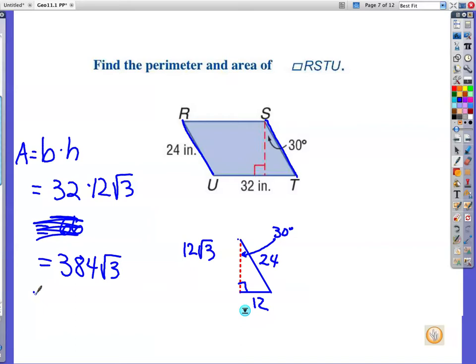And then you would really need to check your answer. You just take 384 square root 3 in your calculator, and that gives you 665.1. And that way you can double check in the back of the book for the answer like that. Okay, next example.